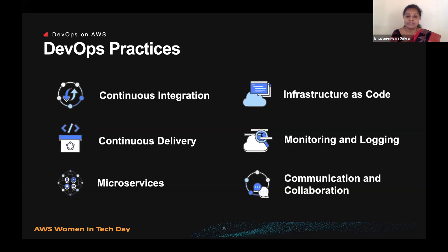When continuous delivery is implemented properly, developers always have a deployment-ready build artifact that has already passed through a standardized test process validated by automated test suites. Microservices is a design approach to build a single application as a set of small services, where each service runs its own process and communicates with other services through a well-defined interface. Infrastructure as code means configuration and policies can also be codified — infrastructure is provisioned and managed using code and software development techniques such as version control and continuous integration applied to infrastructure creation scripts.